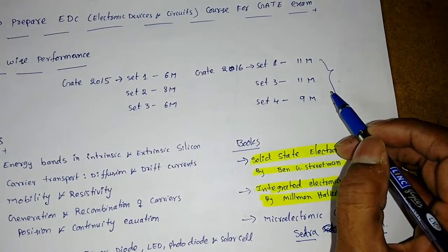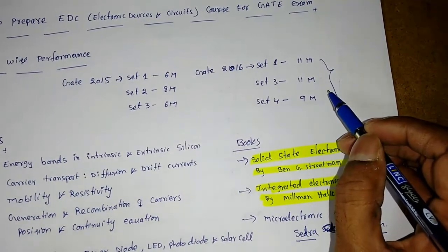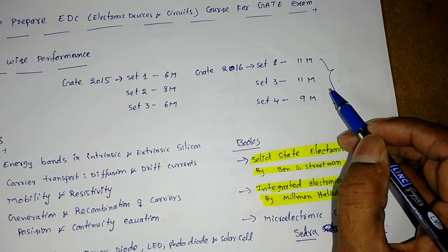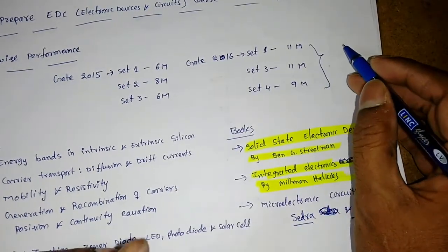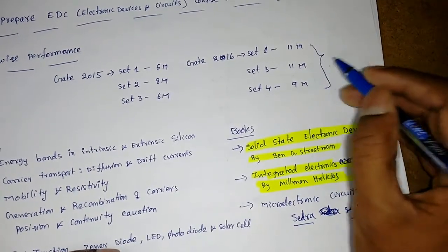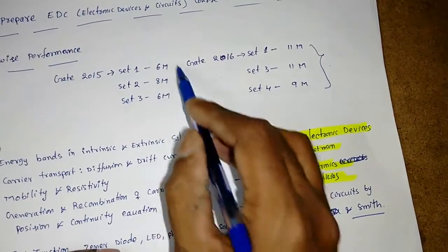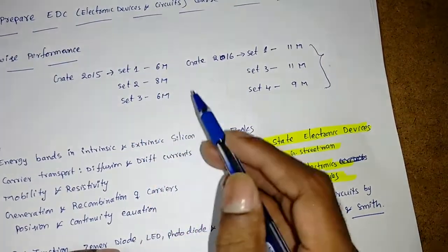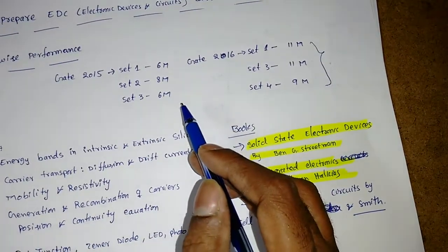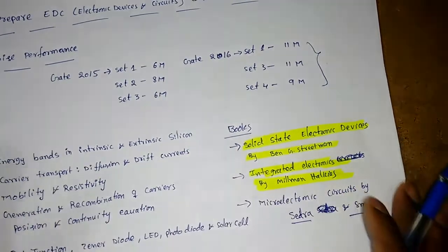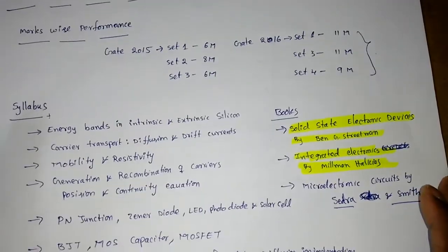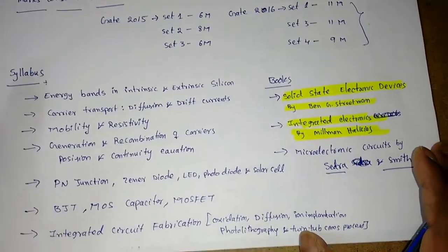Generally, we will get 8 to 10 marks in the average range. If you are getting less marks in EDC, we may get more marks in analog electronics—it doesn't matter.